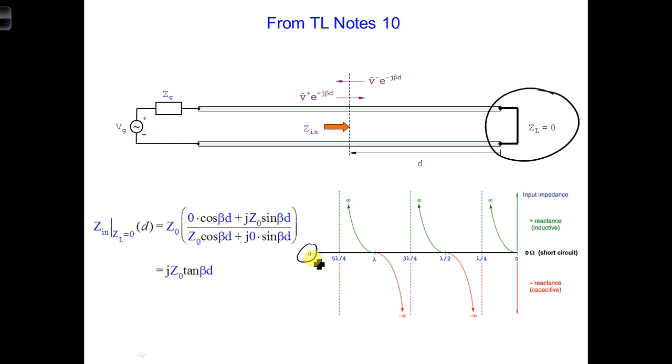In other words, we can select a specific length of a shorted transmission line, and it can give us any inductance or capacitance value we want. Surely, we can find a distance here where we can get the exact admittance, the imaginary part of the admittance that we want to cancel.